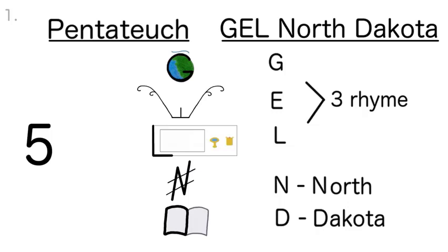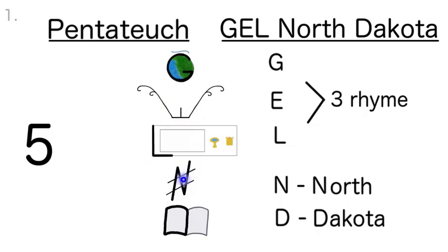Let's say the books only three times with the pictures: Genesis, Exodus, Leviticus, Numbers, Deuteronomy. Genesis, Exodus, Leviticus, Numbers, Deuteronomy. Genesis, Exodus, Leviticus, Numbers, Deuteronomy.